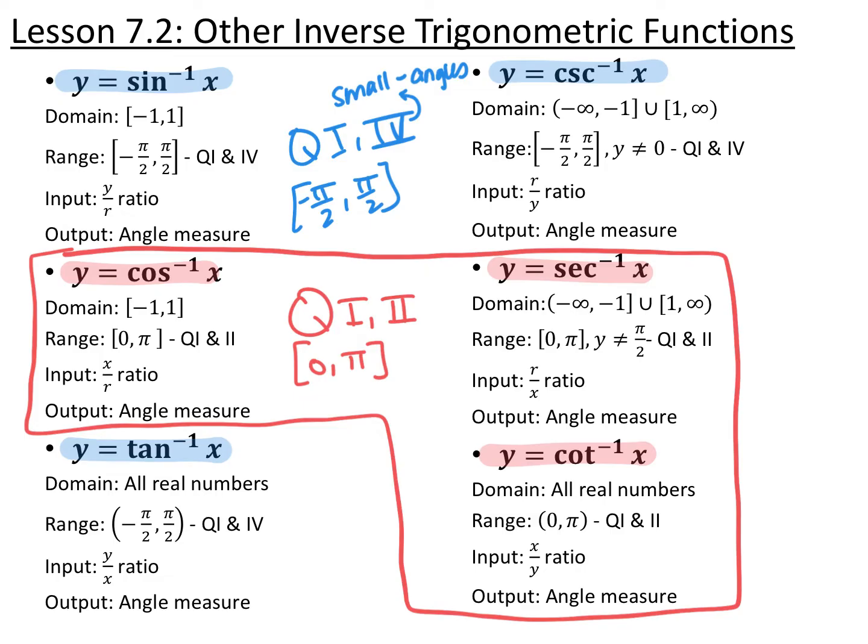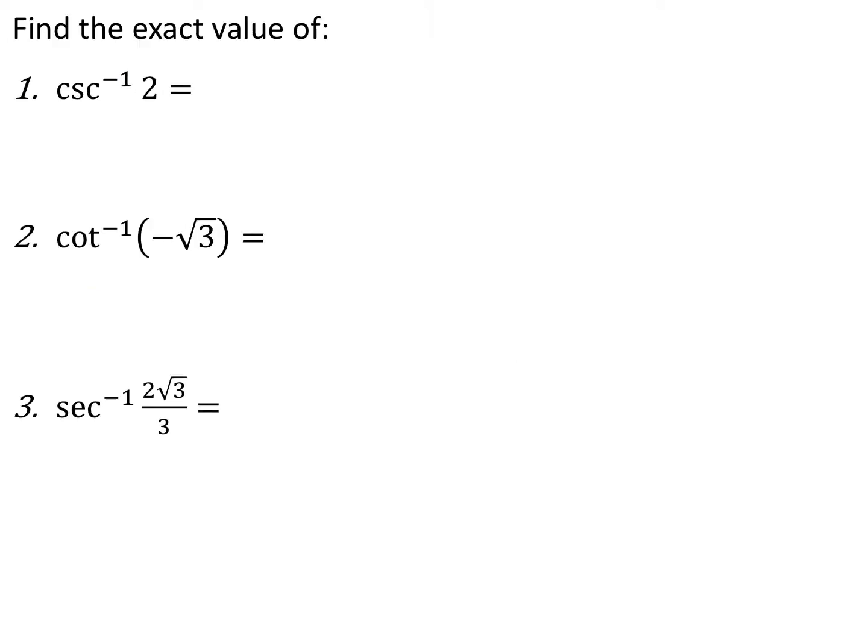The angles in quadrant four we always label as the small negative angles. These two problems are very similar to the ones we did in 7.1, except now they are cosecant inverse, cotangent inverse, and secant inverse problems. Go ahead and pause the video and evaluate these.